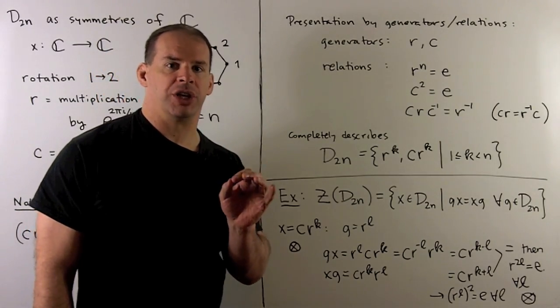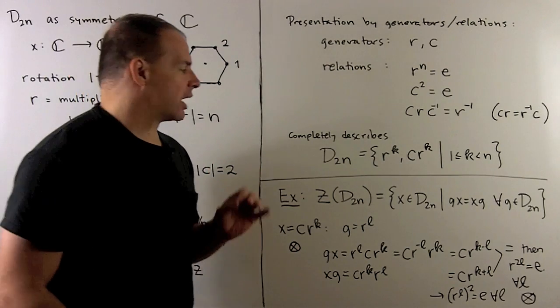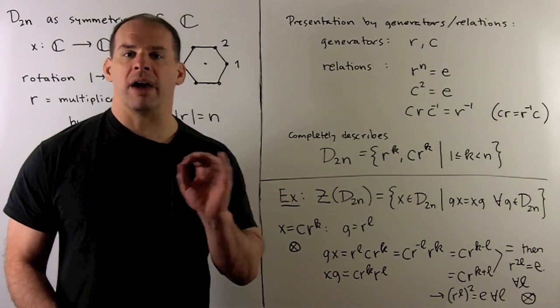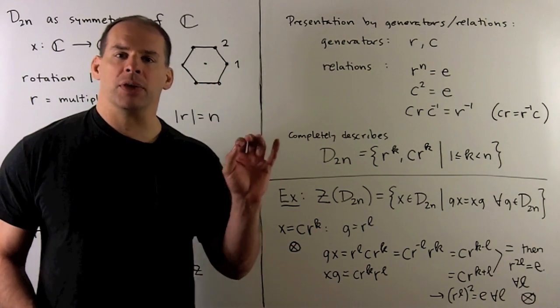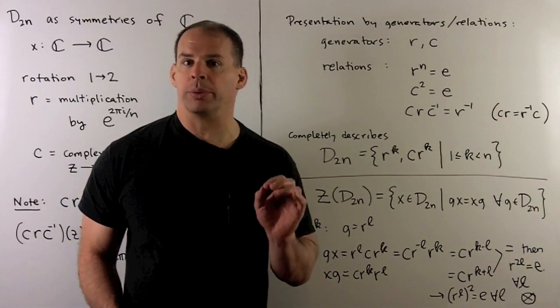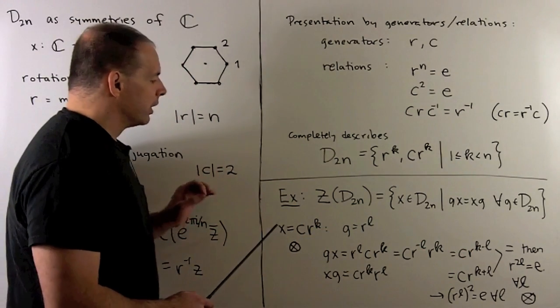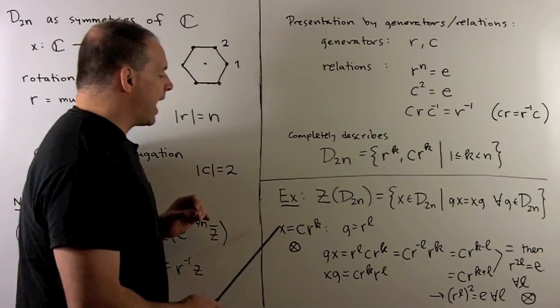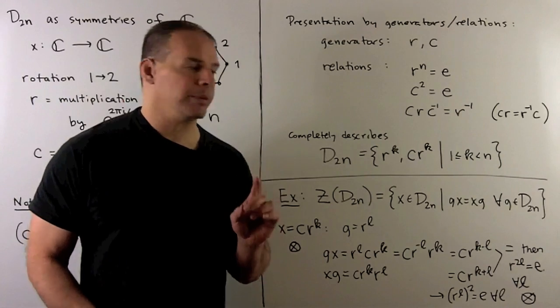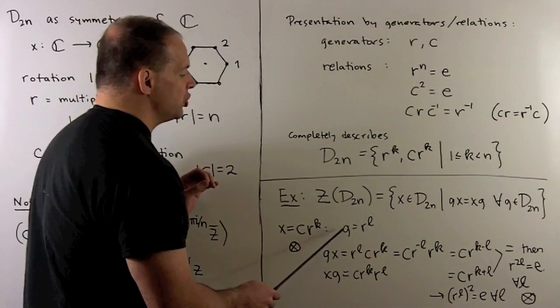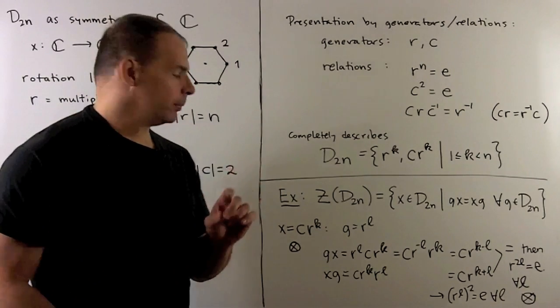As an application of this notation, let's find the center of D2n. Recall, the center of D2n is the set of all x in D2n that commute with every other element in the group. As we calculate, think about how things would go if we were using the notation from the symmetric group. There's a real advantage to knowing how to write things like this. Let's start with the reflections. I'm going to let x equal c times r to the k, and we'll see what happens if we try to commute with a rotation. We'll take a rotation g equal r to the l. We're going to multiply g times x, x times g, and set them equal.